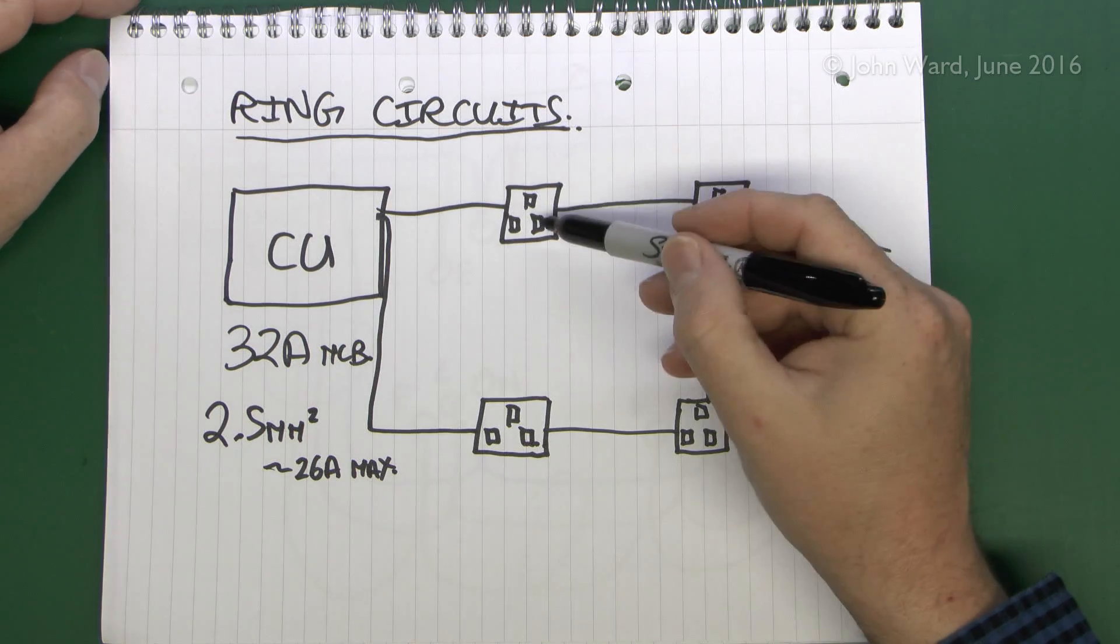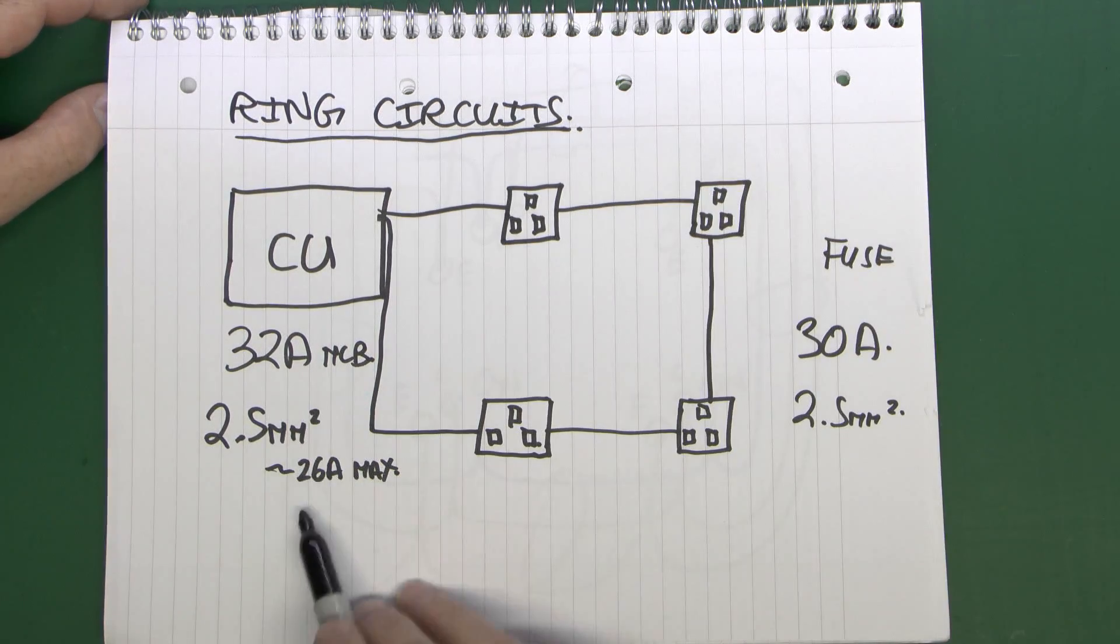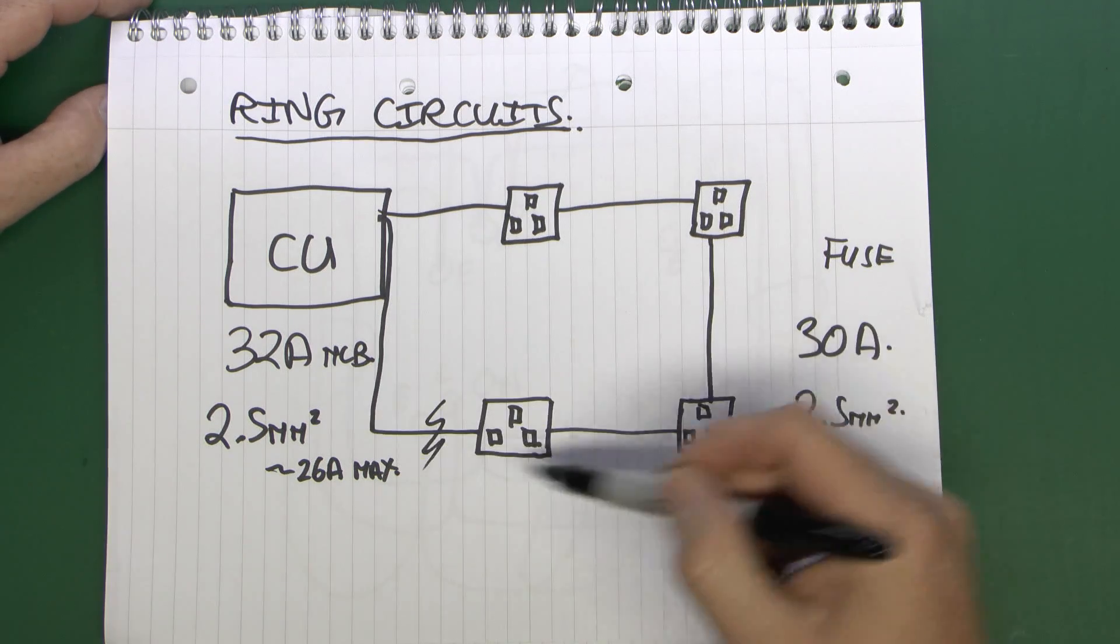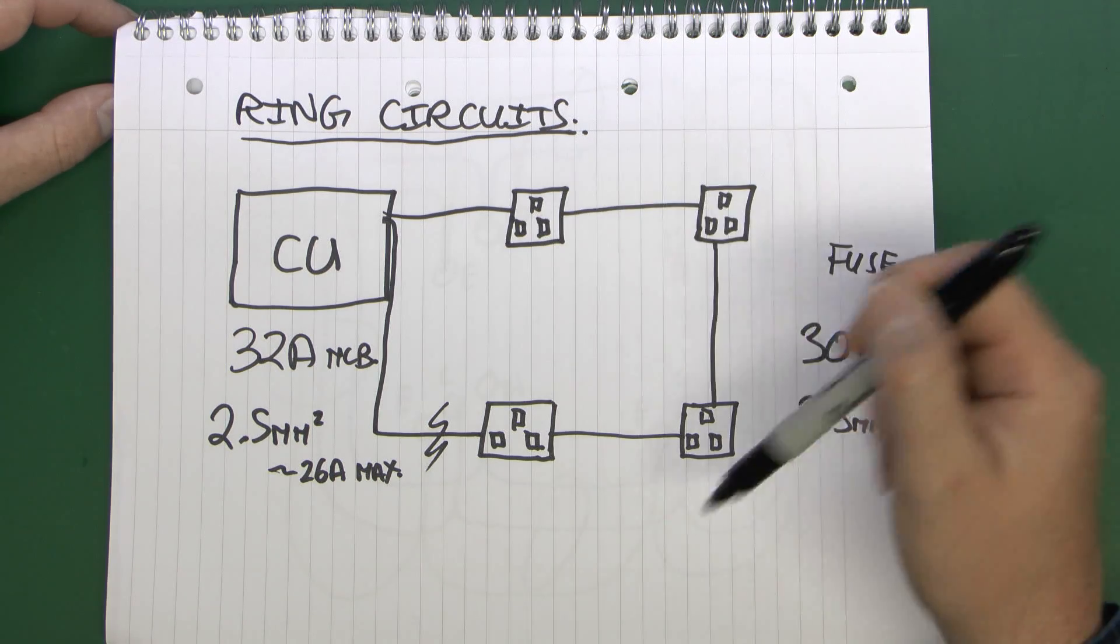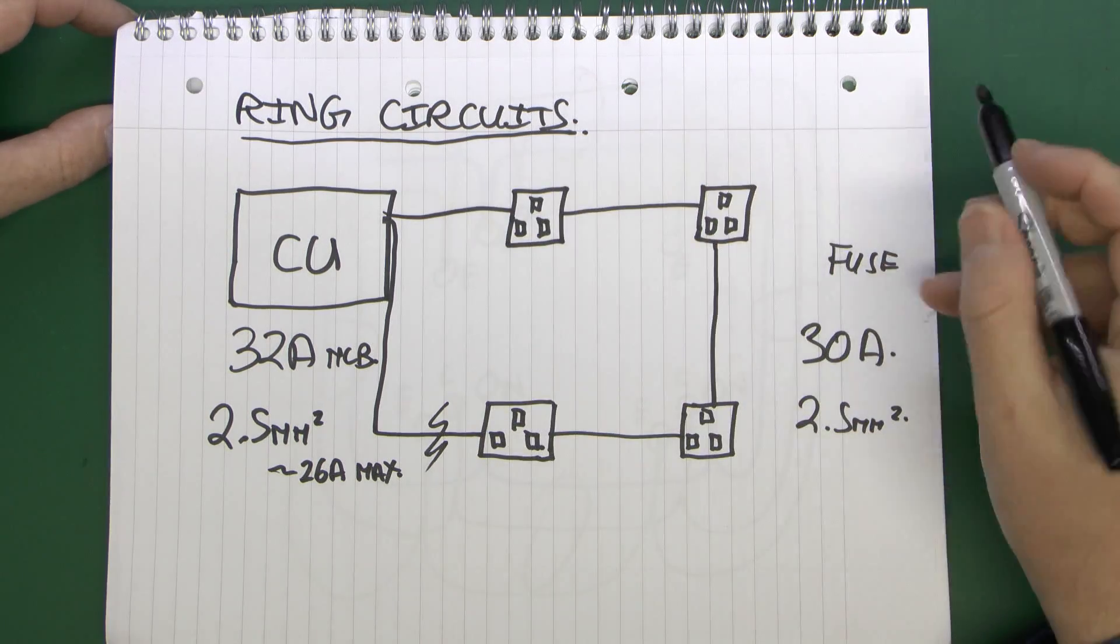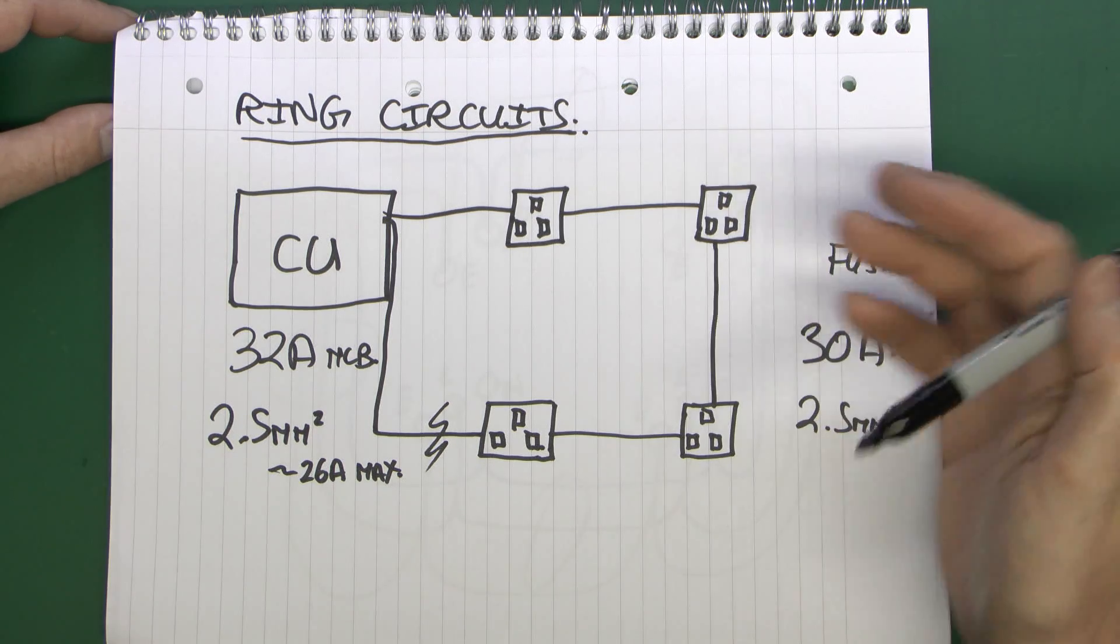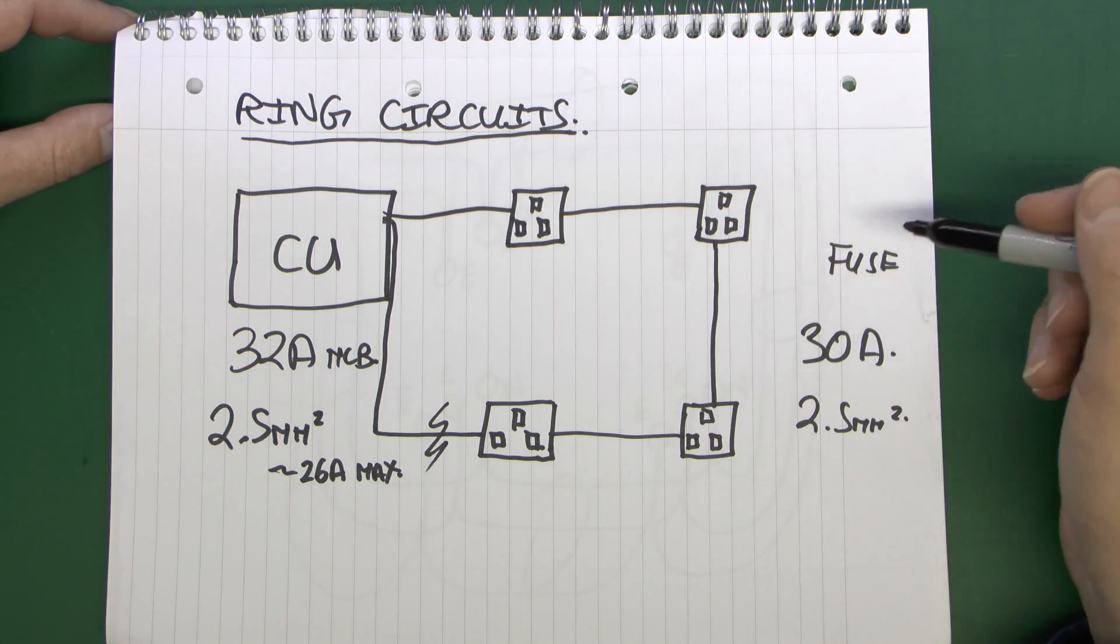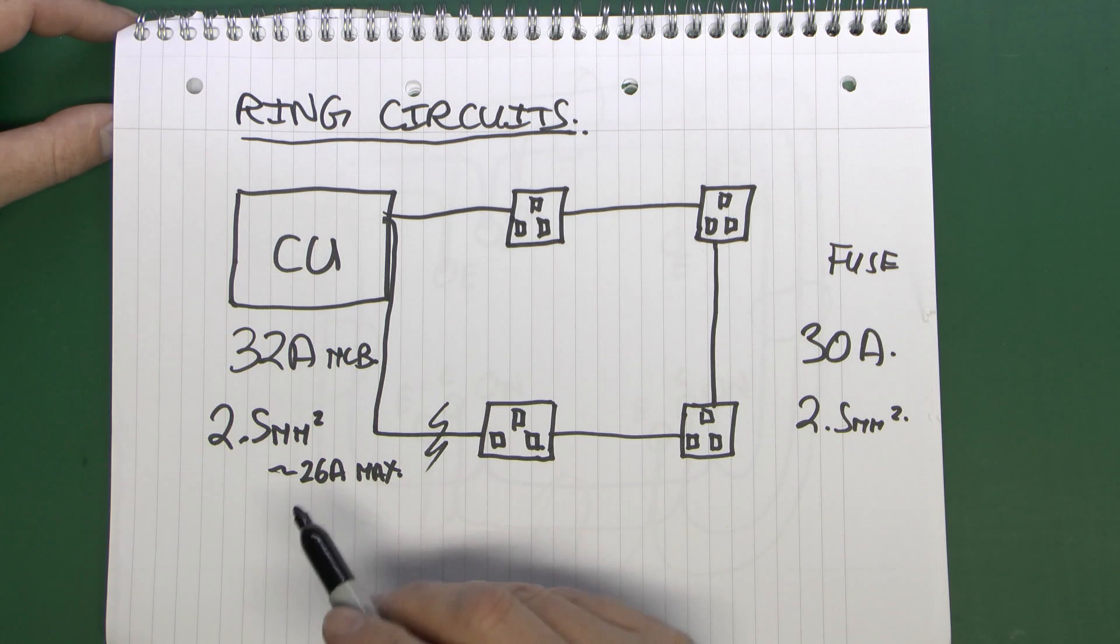Now potential problems that can occur with this is that if one of the wires becomes broken or loose, or wire pulls out of a socket or whatever, then the thing will continue to work. But then you've got the problem that the cable is only rated to 26 amps. So if there was a break here, potentially you can actually overload the cabling of the circuit because there's no dual path for the current to flow now. So testing on these is absolutely essential to make sure that the ring is complete. And that applies to all three conductors, the line, neutral and the earth. Unfortunately, if one of these becomes broken or loose at any point on the circuit, the whole thing continues to work and you wouldn't actually notice any difference.